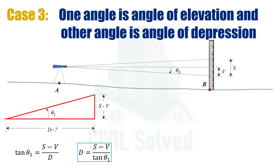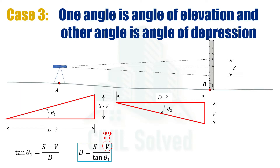Here we can see that there are three variables, but v is the only variable that cannot be determined in the field. So in order to calculate the v distance, we are going to consider another right angle triangle. In this right angle triangle, the angle is θ₂, the perpendicular is v, and the base is d. Taking tan θ₂, we will have tan θ₂ equal to v over d. By cross-multiplying, v would be equal to d·tan θ₂.